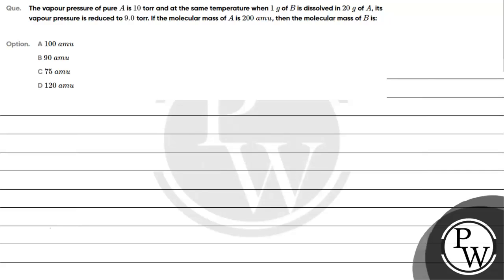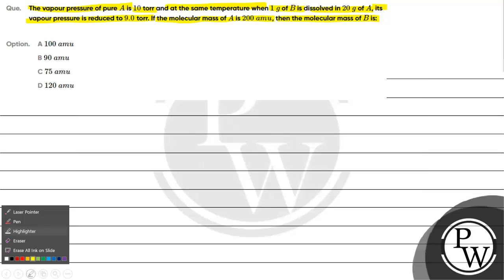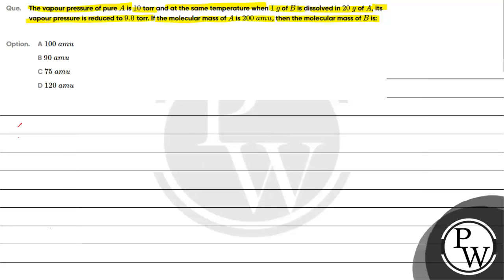Let's read this question. The question says the vapor pressure of pure A is 10 torr, and at the same temperature when 1 gram of B is dissolved in 20 grams of A, its vapor pressure is reduced to 9 torr. If the molecular mass of A is 200 amu, then what is the molecular mass of B? Option A is 100 amu, B is 90 amu, C is 75 amu, D is 120 amu.